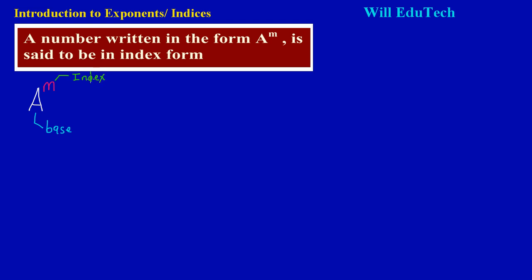Just in case your teacher refers to it differently — the small number up top can be called either of three names: the index, the power, or the exponent. So when working with indices, the big number at the bottom is the base, and the small number up top can be called the index, the power, or the exponent.